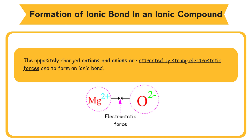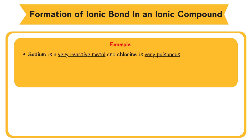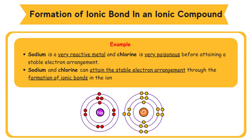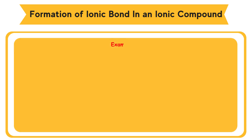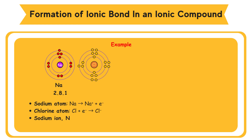Formation of ionic bond in an ionic compound. Example: sodium is a very reactive metal and chlorine is very poisonous before attaining a stable electron arrangement. Sodium and chlorine can attain the stable electron arrangement through the formation of ionic bonds in the ionic compound sodium chloride. The electron arrangement of sodium atom is 2.8.1. Sodium atom donates one valence electron, and a sodium ion Na+ cation is formed, achieving the octet electron arrangement.